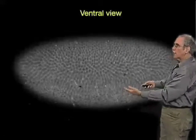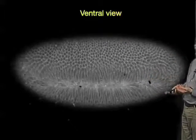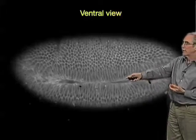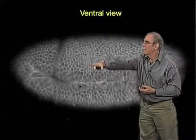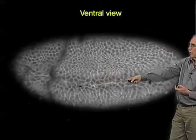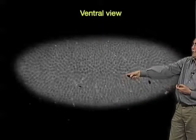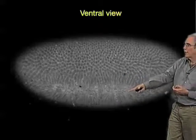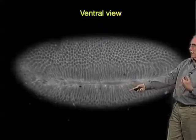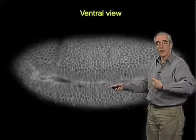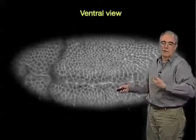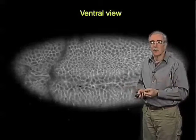We can roll this embryo over and watch from the ventral side to see that other things are going on. You can see a little bit of this head fold here, but more striking are these cell movements — watch right here, you see a fold forming. These are future muscle cells that are going to be brought into the interior of the embryo, because the embryo needs to have muscles.